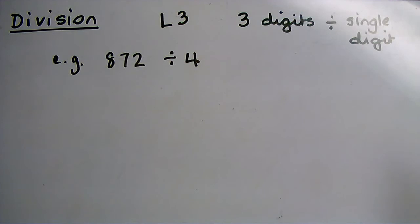I'm going to use the short division method, sometimes called the bus stop division method, to divide a three-digit number, 872, by a single digit, 4.